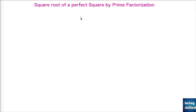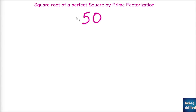In this tutorial we will understand how to calculate the square root of a perfect square by the prime factorization method. Let's say we have the number 50 and we will try to find the square root of this number.